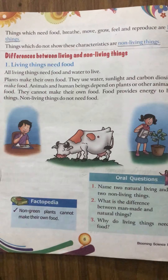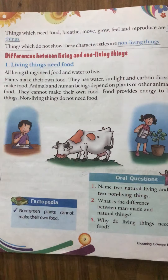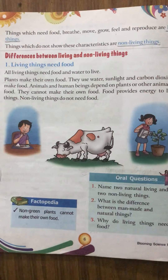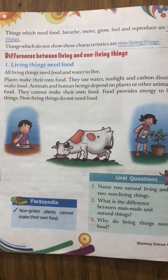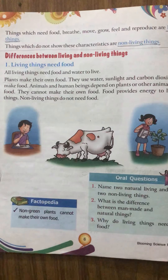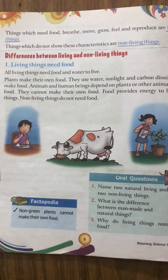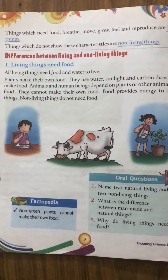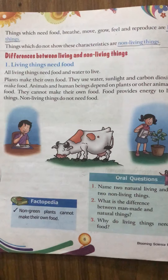The six points we will cover are: first, living things need food; second, living things grow; third, living things move; fourth, living things breathe; fifth, living things feel; and the last one, living things reproduce. In today's video, we will only cover the first three points, and in the next video, we will complete the lesson.